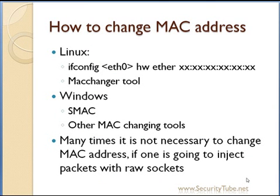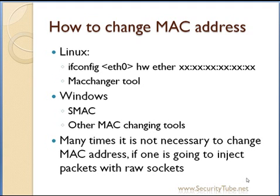How to change the MAC address is the next logical question. On a Linux machine, issue the command 'ifconfig eth0 hw ether' followed by the colon-separated MAC address — for example, 'ifconfig eth0 hw ether 00:11:22:33:44:55' — which will change your MAC address to 00:11:22:33:44:55. Remember, before changing the MAC address you must bring the interface down with 'ifconfig eth0 down', and bring it back up afterward with 'ifconfig eth0 up'.